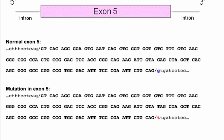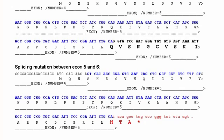A splicing mutation occurs when a base change, either at the beginning or the end — I've marked the end of the exon, beginning of the intron — changes from a letter that the cell expects to a letter that the cell does not expect, in this case a T. What that does is it causes the cell to not know that it needs to move to a different exon. In this slide, I'm showing you the junction between exons 4, 5, and 6.